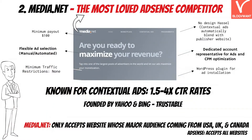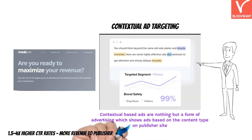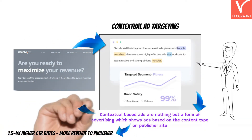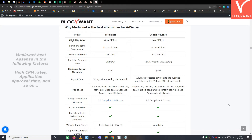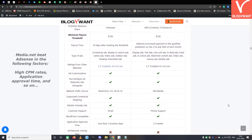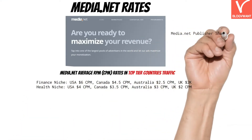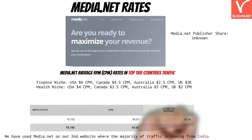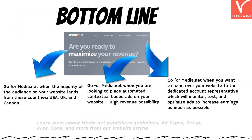There is no traffic restriction to joining Media.net, but they only consider websites whose majority of traffic is located in the USA, UK, or Canada. Contextual-based ads show ad spaces matching the content type on the publisher's site, which increases ad relevancy and hence higher click-through rates, meaning higher revenue. Now go through this comparison table of Media.net and AdSense. Media.net clearly beats AdSense in RPM or CPM rates in top-tier countries. However, Media.net doesn't perform that well in lower-tier countries including India. So in a nutshell, go for Media.net when your monthly traffic is less and the majority of your audience comes from top-tier countries.